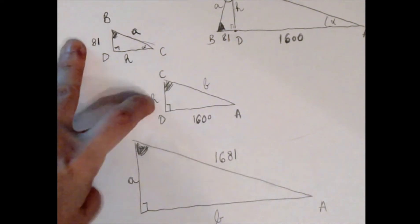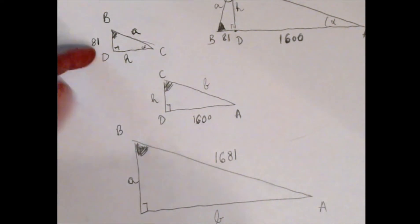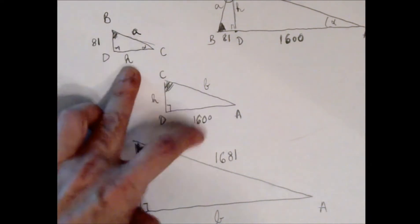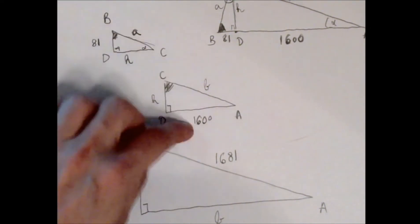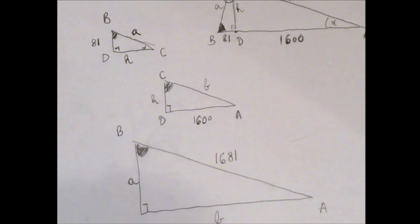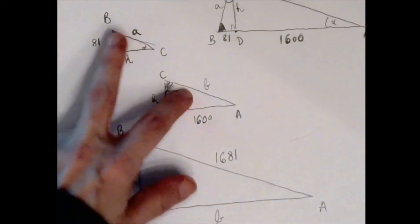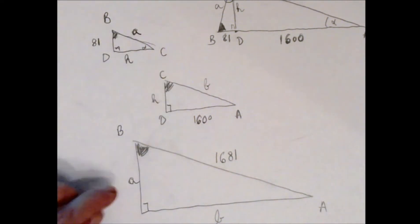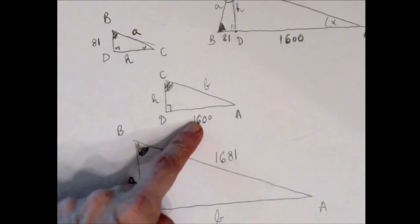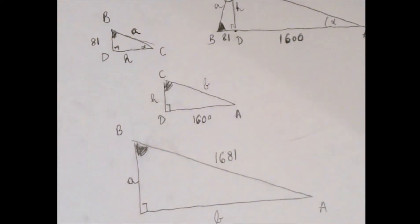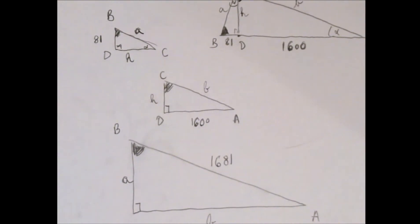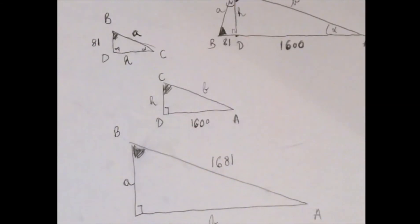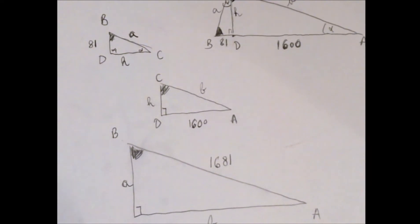That's not going to happen here. 81 and h, 81 and a, h and 1600, a and b—no matter what ratios we express, there is always at least two unknowns in there. The trick is: what if we could fix it so it's the same unknown?